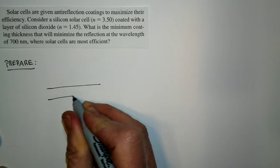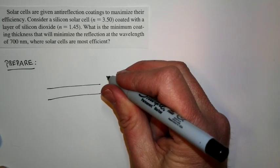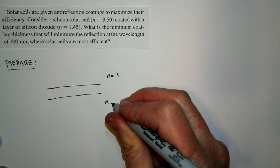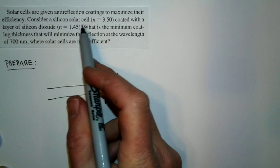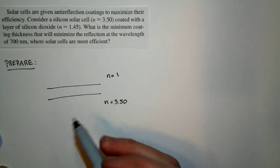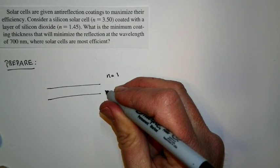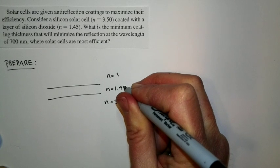The way you do that is you put a coating on top. So let's draw a picture this way. Here's air, which has an index of refraction of 1, and here's the solar cell, which has an index of refraction of 3.50, i.e. this is the silicon solar cell. This is its index of refraction. And on top of it, we put a thin layer of silicon dioxide, which has an index of refraction of 1.45.